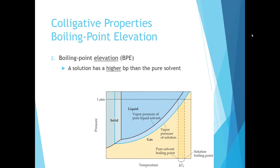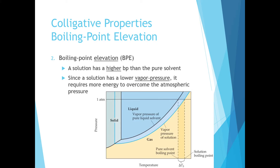Another colligative property is called boiling point elevation, which occurs when the boiling point of a solution is higher than the boiling point of the pure solvent. This is a result of the lower vapor pressure at the surface of the solution, meaning more energy is needed to overcome the stronger intermolecular forces and overcome atmospheric pressure. This can be seen in the phase diagram for water, where the black line is our pure solvent and the blue line is our solution. We compare the boiling point of the pure solvent to the solution and see an increase — delta T of boiling point.